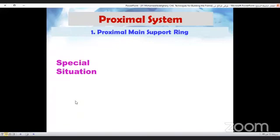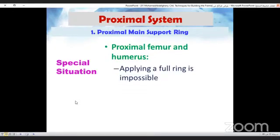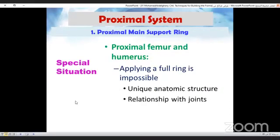Now there is a special situation. How would you apply a full ring to the proximal femur or humerus? This is impossible given the unique anatomic structure and the relationship with the hip and shoulder joints.